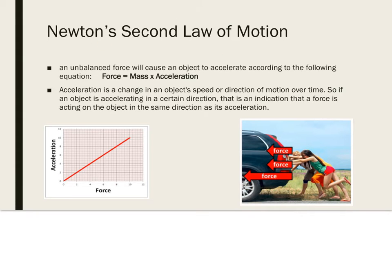Newton's second law of motion states that an unbalanced force will cause an object to accelerate according to the equation: force equals mass times acceleration. Acceleration is a change in an object's speed or direction of motion over time. If an object is accelerating in a certain direction, a force is acting on it in that same direction. An increase in the force acting on an object is associated with an increase in the acceleration of that object — on a graph, this takes the form of a straight line.